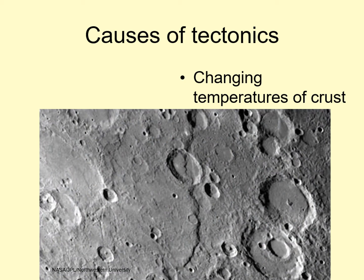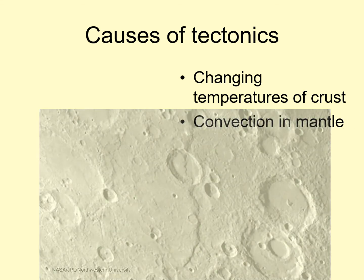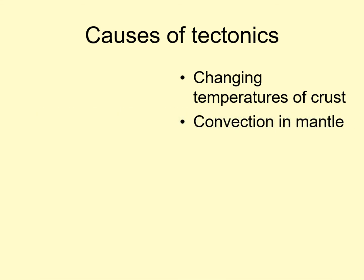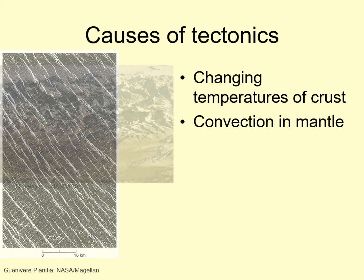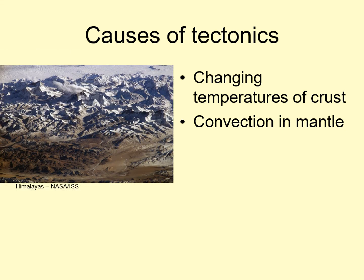Another way that internal heat can drive tectonics is through convection in the mantle. When the hot convective flow moves upward, it spreads apart, pulling the crust with it. Similarly, when the flow sinks down into the mantle, the crust compresses, building up mountain ranges. We'll look at this more when we discuss plate tectonics on Earth.